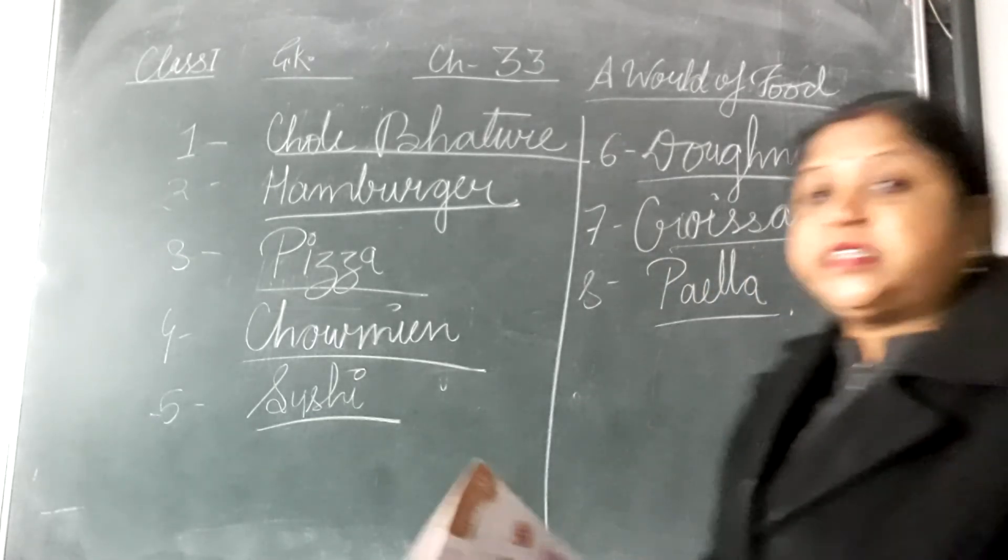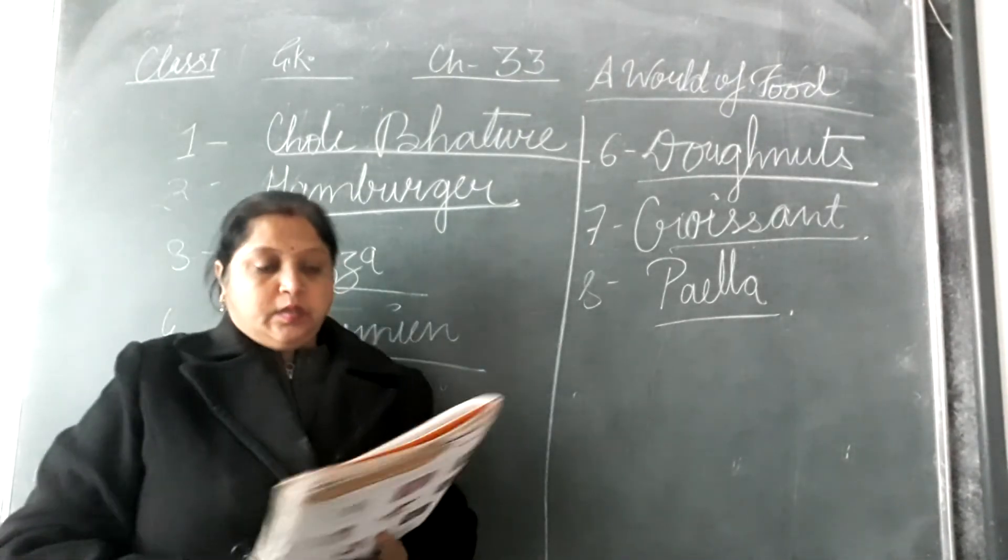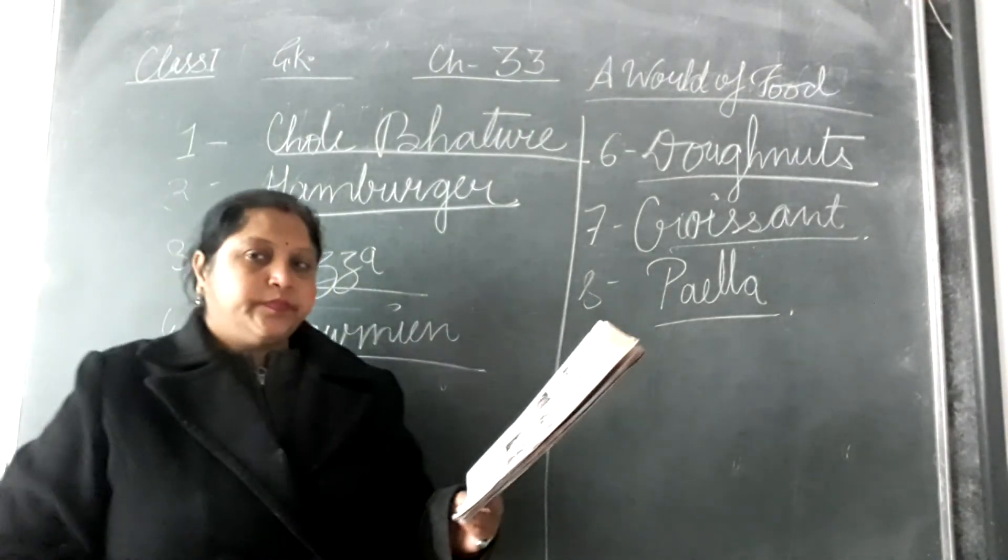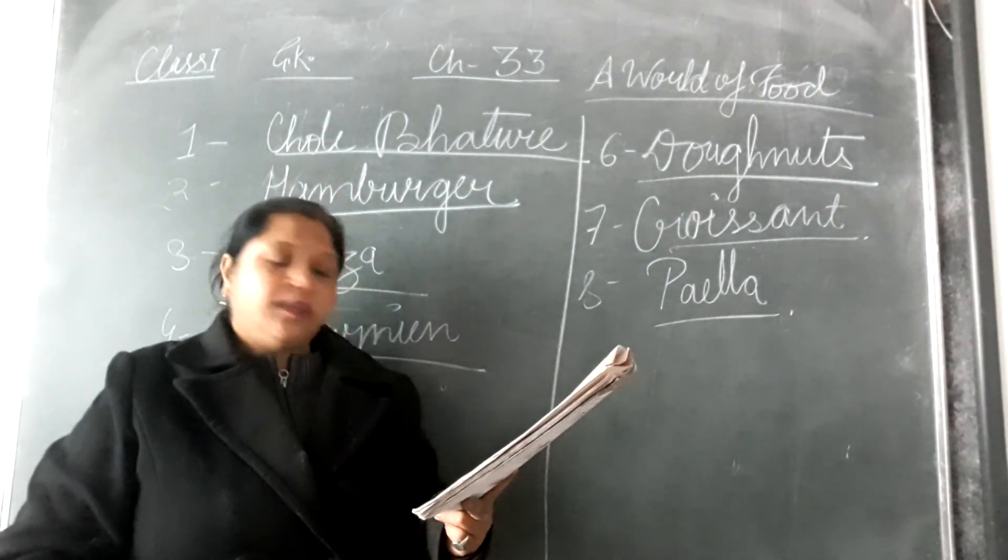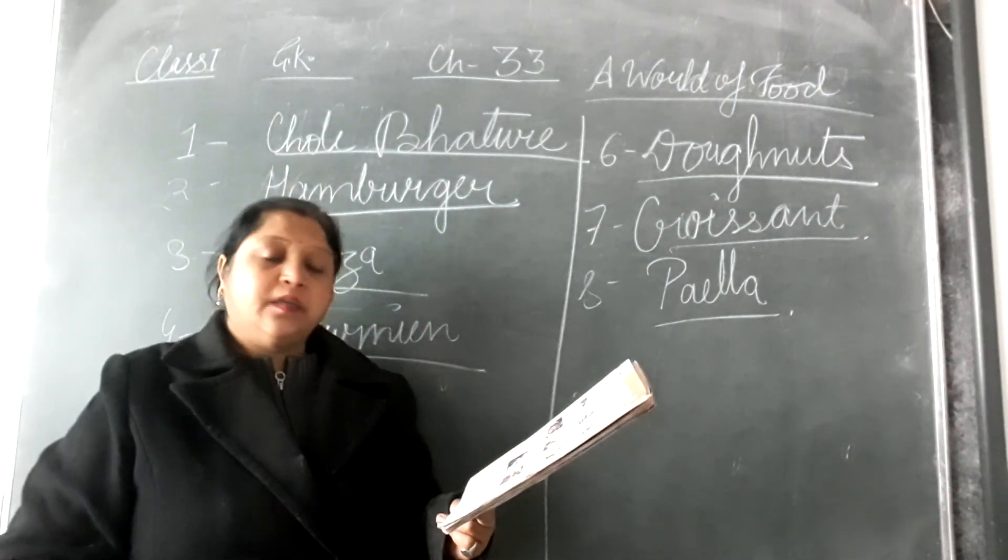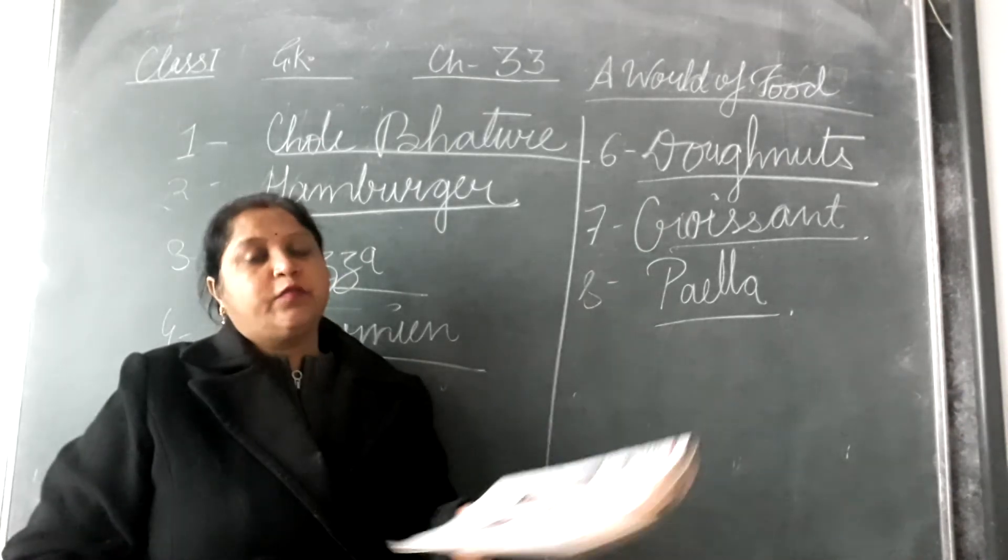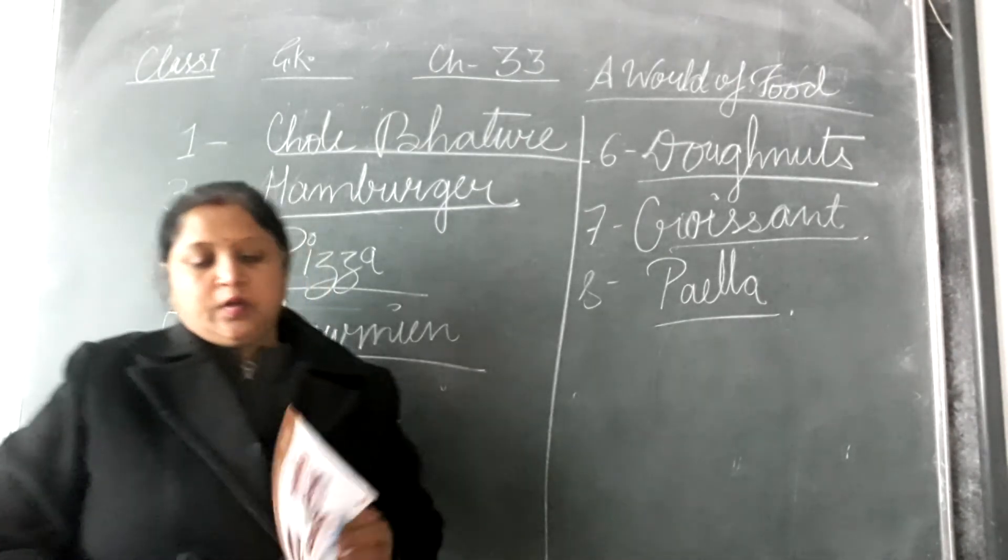So all of you complete chapter 33 in your book. Chowmein from China, hamburger from Germany, donuts from USA, sushi from Japan, pizza from Italy. Please learn from your book. You do not need to write in copy.